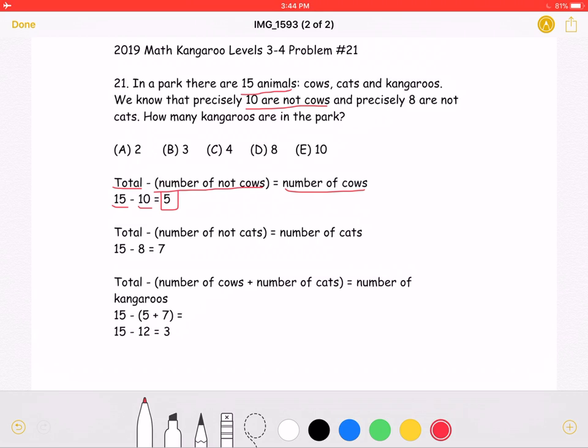Now we can do the same to find the number of cats. Take the total, subtract the number that are not cats, which will give us the number of cats. For the total of 15 animals, the problem states that precisely 8 are not cats, which would mean that 7 must be cats.